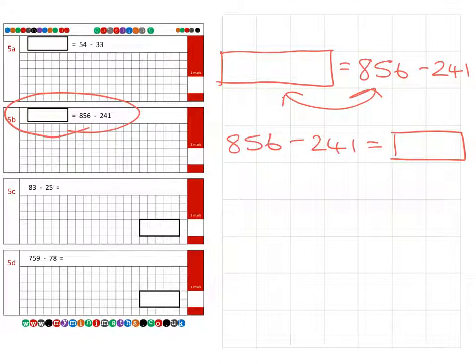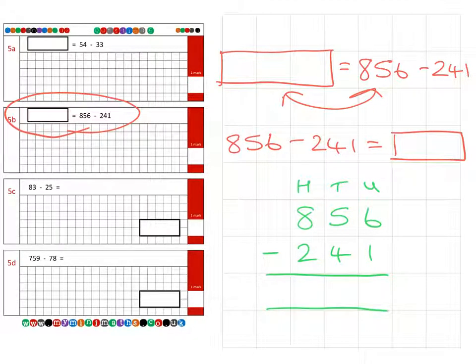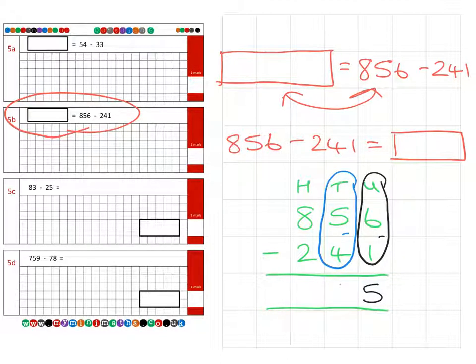Now we perform the calculation. 856 in the hundreds, tens, and units column. We're subtracting 241. First, the units column: six subtract one is five. Then the tens: five tens subtract four tens is one ten. Finally, the hundreds: eight hundreds subtract two hundreds is 600, for a final answer of 615.